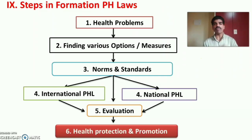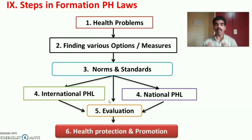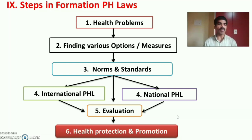Next are the steps in formation of public health laws. First, identification of various health problems in the nation. Second, finding various options or measures to resolve those health problems. Third, setting norms and standards of public health laws. Fourth, making the public health laws — finding out whether international public health laws already exist for the particular problem or making new national public health laws. Fifth, implementation of public health laws. The sixth step is evaluation of the public health laws. And the last step is protection and promotion of public health through the particular public health law.